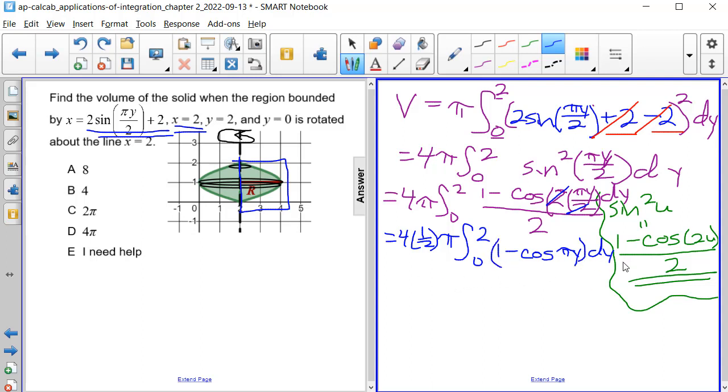This is much easier to integrate. And we can simplify what's out in front. 4 times 1 half is 2, so we have 2 pi. And now we can integrate with respect to y. We'll have a y in place of the 1, and then we'll have minus. Now, the integral of cosine is sine, so we have a sine. Keep the pi y as the angle.